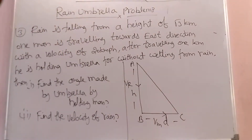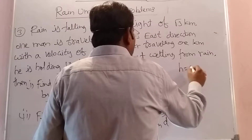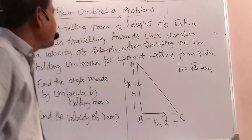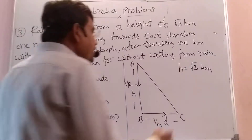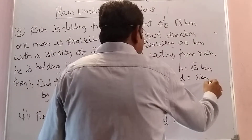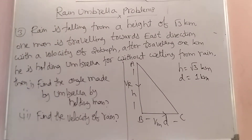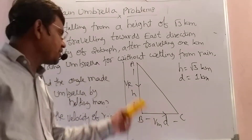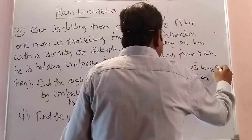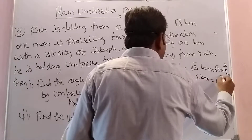First, let's write the given information. Height H equals root 3 km. Similarly, after travelling 1 km distance, D equals 1 km. We are converting into the SI system. Otherwise we are just finding the ratio. So write H equals root 3 into 10 to the power 3 meters, and D equals 10 to the power 3 meters.